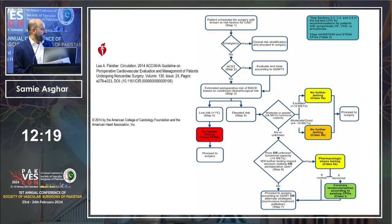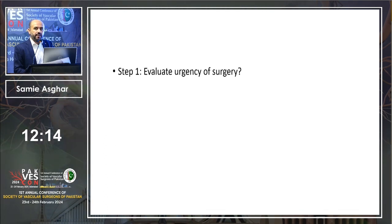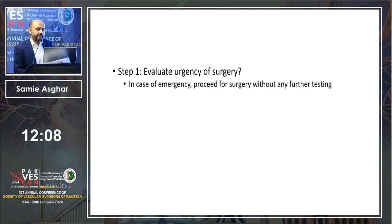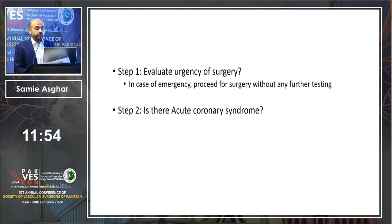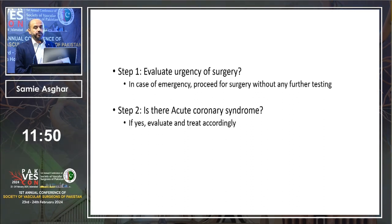These are the AHA guidelines. Step one: the AHA guidelines ask what is the urgency of the surgery. In case of emergency, proceed for surgery without any further testing. Step two: is there an acute coronary syndrome? Acute coronary syndrome includes NSTEMI, ST segment changes, or unstable angina. If there is ACS and it is not an emergency, it should be treated before surgery.